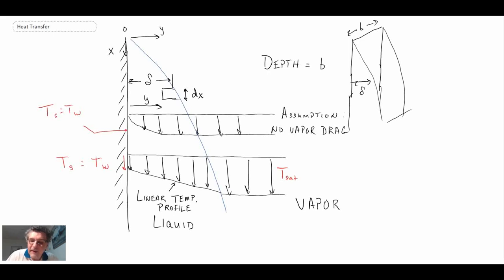A couple of things that he assumed: one was that there was no vapor drag. What that is implying is that there is no shear on the surface of the film as it is forming and moving down.